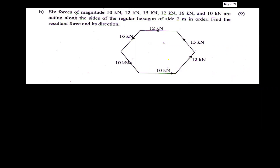If you have a hexagon and you want to find the resultant, you will find the direction of the resultant. If you have horizontal and vertical forces, you will find the resultant. R is equal to the square root of the sum of Fx squared plus the sum of Fy squared. This is the resultant formula.